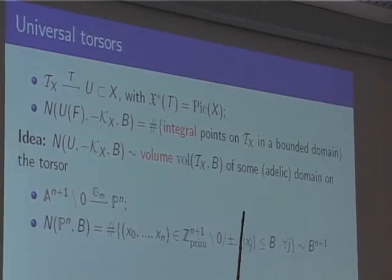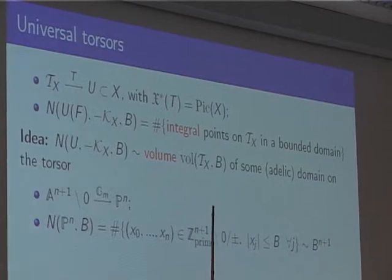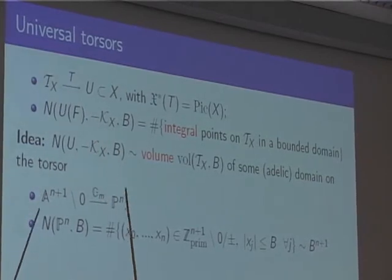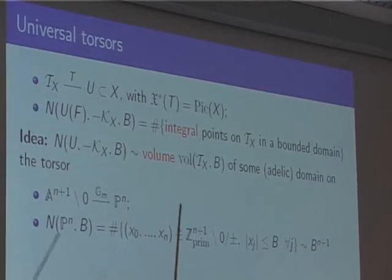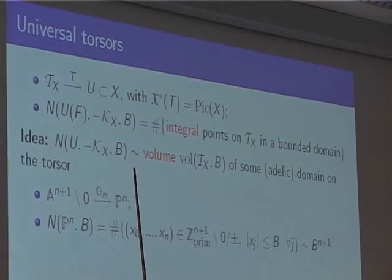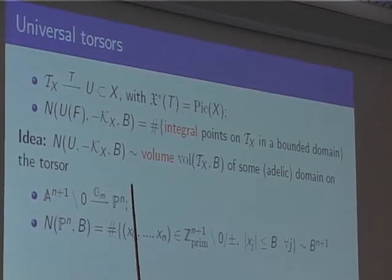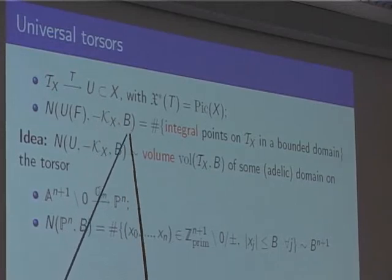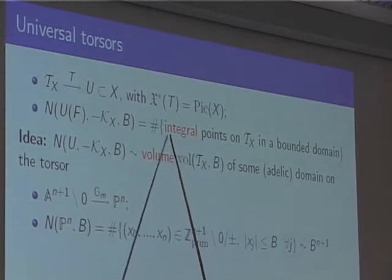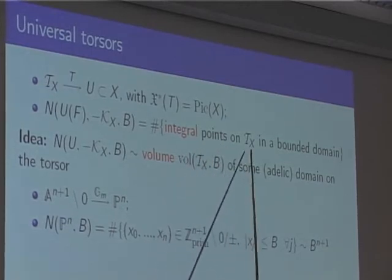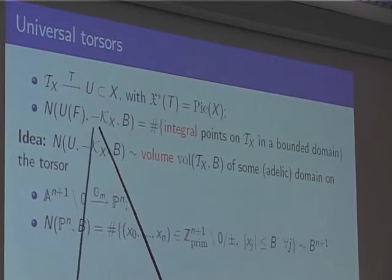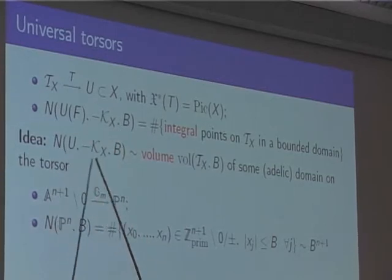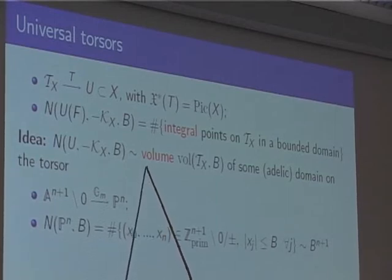There is still a small indeterminacy: a point on projective space is defined up to multiplication. Here you quotient out by the integral points of the Néron-Severi torus — over the integers that would be (Z/2)^r where r is the rank of the Picard torus. The idea is that counting rational points downstairs lifts to counting integral points on the torsor in some domain determined by the height inequality. In the Fano case, the asymptotic should be given by the volume of some adelic domain on the torsor.